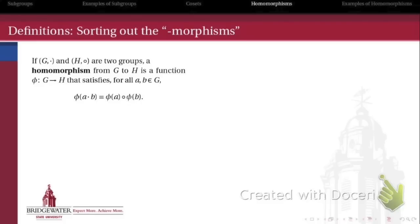In our final video, we're going to talk about homomorphisms between groups and how they let us compare one group to another group, both its elements and the operation that ties those elements together. If I have two groups G and H, they might have potentially different looking operations — let's call G the group with the operation dot and H has the operation circle. A homomorphism from G to H is a function that takes elements of G and turns them into elements of H, and that function satisfies: for all A and B in G, the function operating on the composition of A with B gives us the same answer as the composition of that function operating on A and that function operating on B.